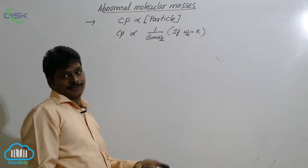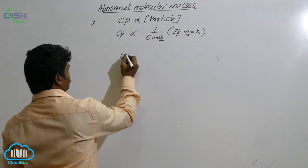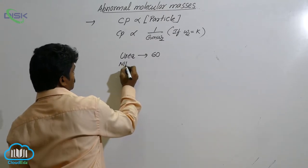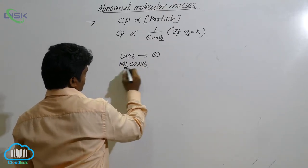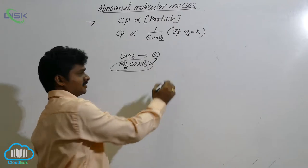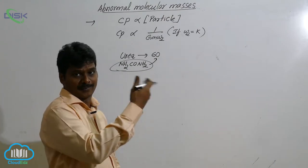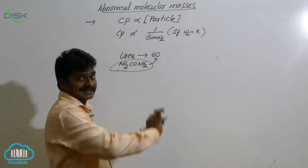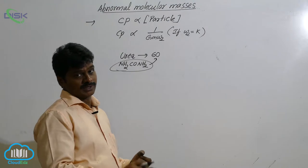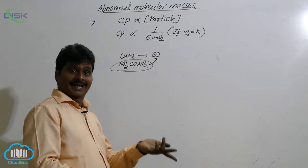The observed value and calculated value of molecular weight can be compared using urea as an example. The molecular weight of urea (NH₂CONH₂) is 60, calculated from the formula. If we find out this value using any colligative property method, we also get 60. So for substances like urea, glucose, and sucrose, the observed molecular weight and the calculated value are the same.